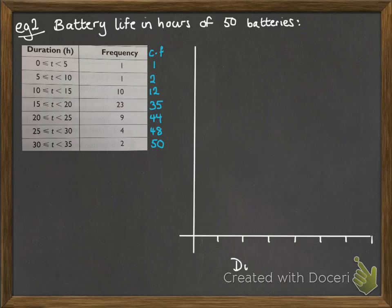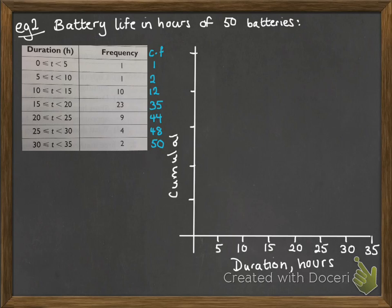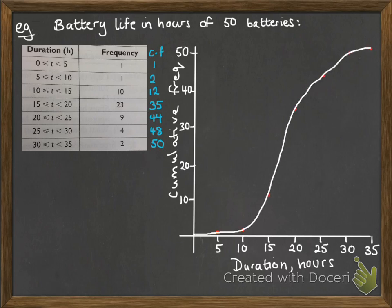Then we're going to plot a graph and plot each of those points that we've worked out on that cumulative frequency. The numbers in blue are what's being plotted onto this graph.